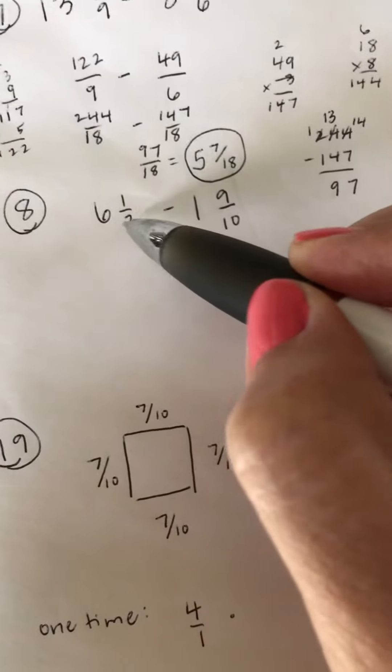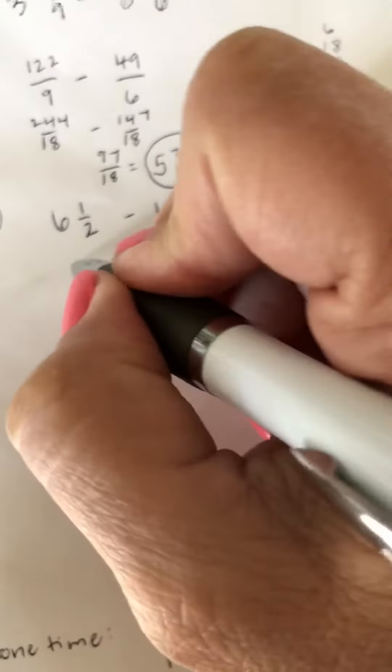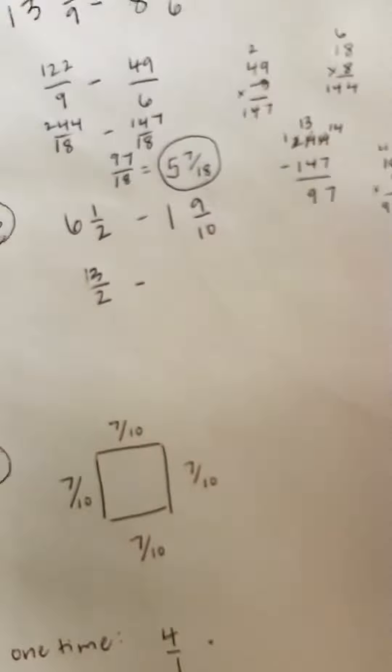So to do that, we multiply the denominator times the whole number. So this would be 12. Add one, that would be 13. Keep the denominator the same, that's 13 over 2.